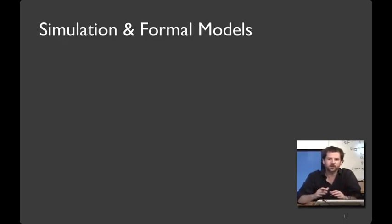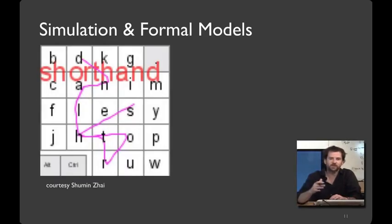This makes it possible to try out a number of alternatives really fast. Consequently, when people use simulations, it's often in conjunction with something like Monte Carlo optimization. One example of this can be found in the ShapeWriter system, where Schumann-Sai and colleagues figured out how to build a keyboard where people could enter an entire word in a single stroke. They were able to do this with the benefit of formal models and optimization-based approaches.